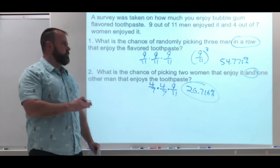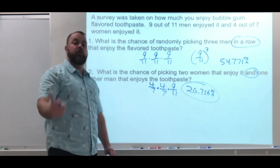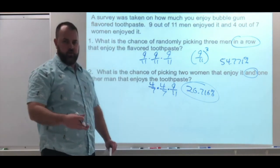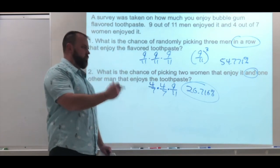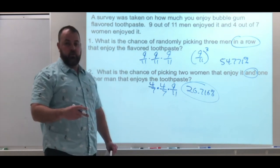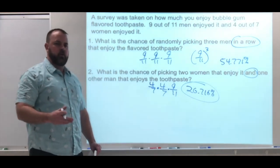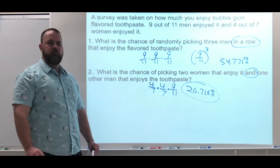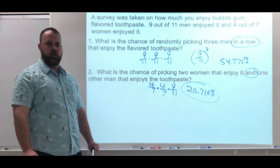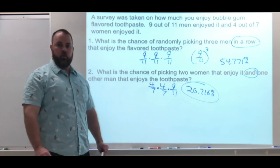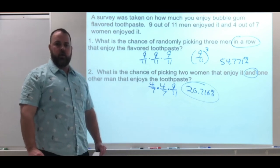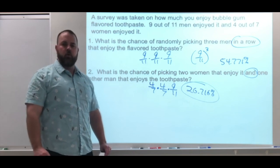Now notice, for all the times for these two problems, we said we're picking three men in a row. All three men enjoyed the toothpaste. We said two women, both women enjoyed the toothpaste. That's kind of important. I want you to think about that for a little bit, especially when we get into the binomial section of this chapter. So that's some basic probability that you're going to need to go moving forward.